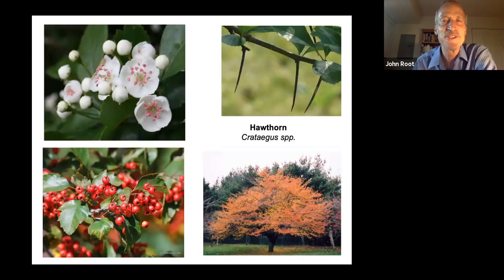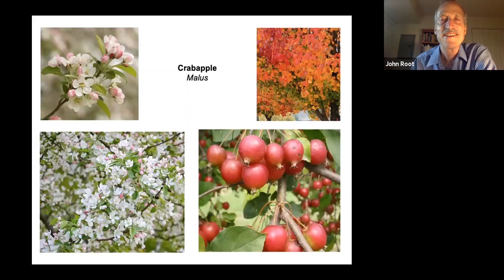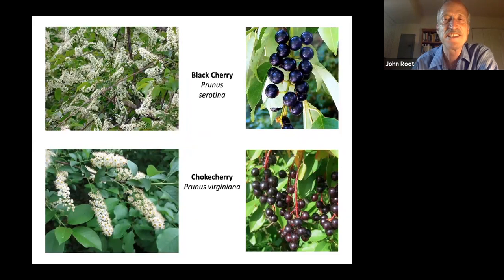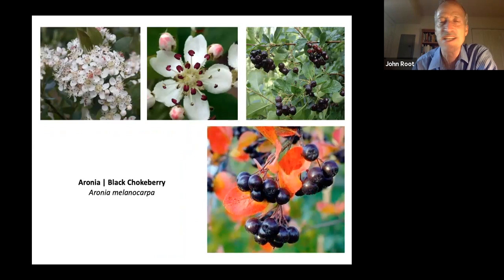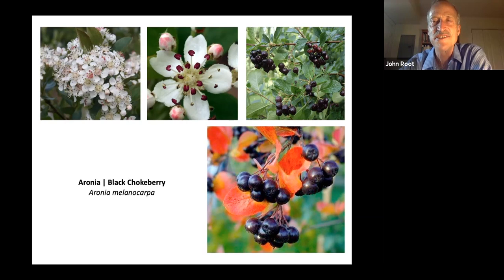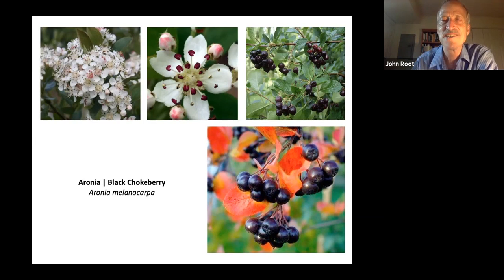Crabapple is quite popular as an ornamental and it's great for both insect pollination and birds. Birds love black cherry and choke cherries, and so do the pollinators going after the flowers. Here's another one: aronia, or black chokeberry — not choke cherry. This is a shrub that has often been grown as an ornamental because it is stunningly beautiful in all seasons. Those fruits are also edible for both humans and birds. Don't taste great right off the shrub, but if you cook with them they're fantastic — and it's also a medicinal plant for humans.